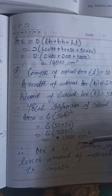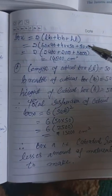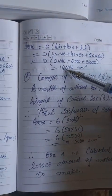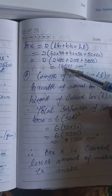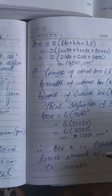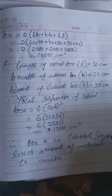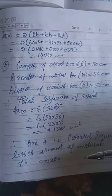Since box A has surface area 14,800 and box B has 15,000, box A uses less material. Therefore, box A, the cuboidal box, requires a lesser amount of material to make.